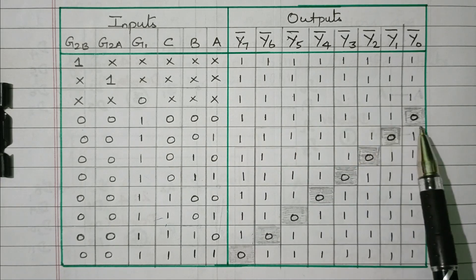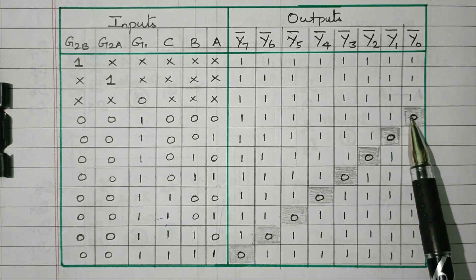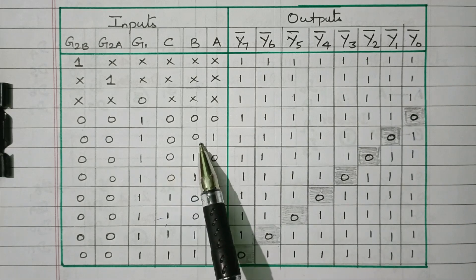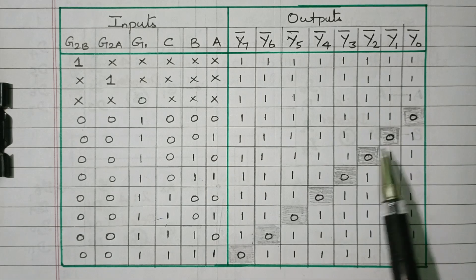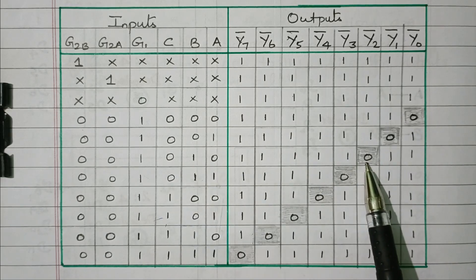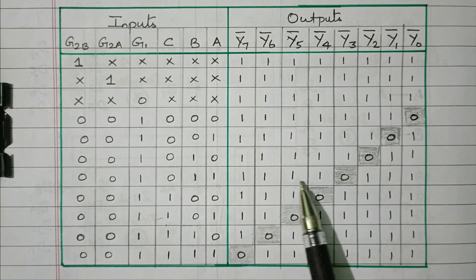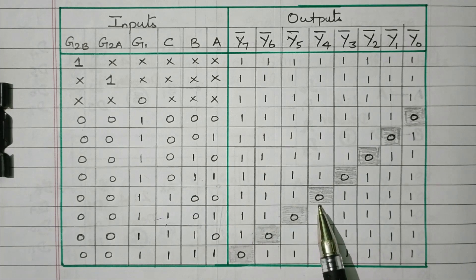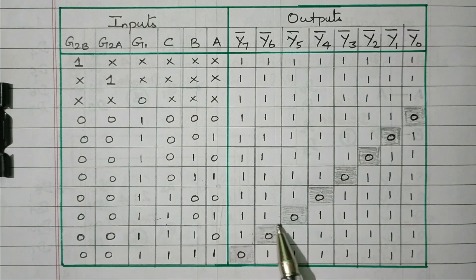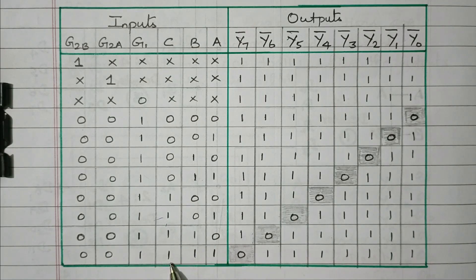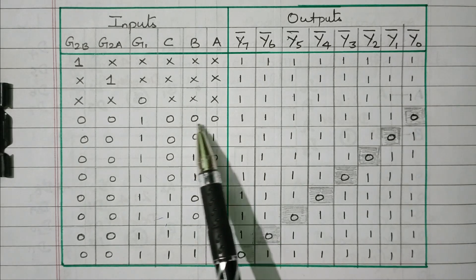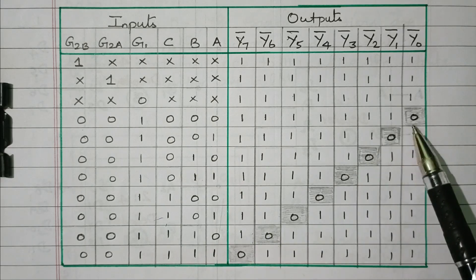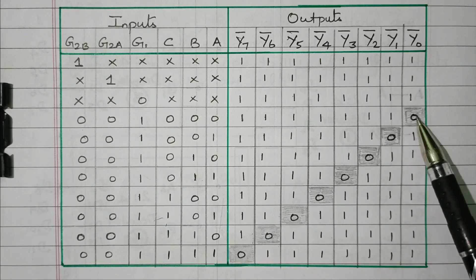Continuing the truth table: A,B,C = 1,0,0 means Y4 bar is 0, other digits are 1. A,B,C = 1,0,1 means Y5 bar is 0, other digits are 1. A,B,C = 1,1,0 means Y6 bar is 0, other digits are 1. Finally, A,B,C = 1,1,1 means Y7 bar is 0, other digits are 1. So based on the three digits A, B, C with eight combinations, we get eight different outputs from Y0 bar to Y7 bar — each selected output is 0 and all other terms are 1.